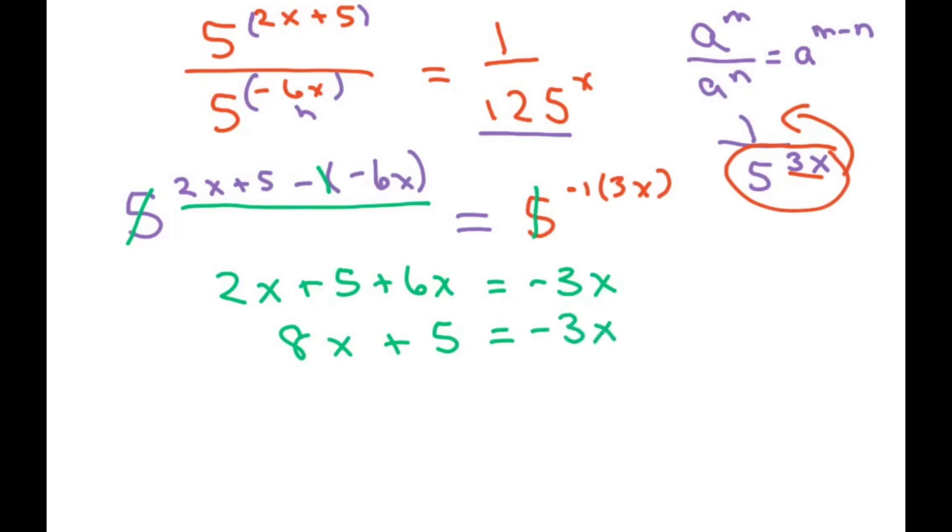Since I want my x positive, I'm going to add 3x to both sides with like terms. And I'm going to subtract 5 from both sides. And this cancels and this will cancel. So we get 11x equals negative 5.